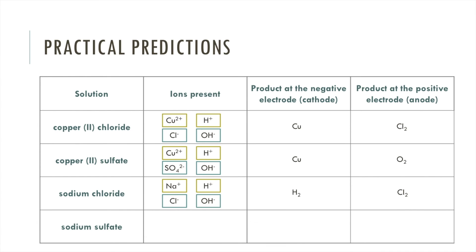Finally, sodium sulfate: we have Na⁺ and SO₄²⁻ ions, and in aqueous solution we also have H⁺ and OH⁻. At the negative electrode there is a choice between Na⁺ and H⁺ — hydrogen is less reactive than sodium, so we get hydrogen gas. At the positive electrode the negative ions are attracted; there is no halide ion, so we get oxygen.